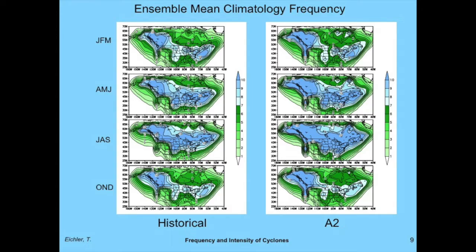Looking at the A2 run, you get basically the same kind of pattern. One strange feature: in the summertime, there are too many storms across much of the U.S. What's interesting is where I show the intensity, these are mostly very weak storms — I don't get an increase in intensity in this area, nor an increase in rainfall, so this is something the models are doing that needs further explanation.